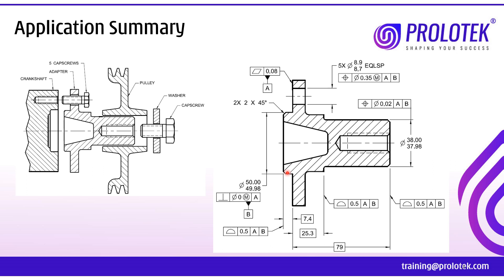If we take this diameter as an individual feature, it is an axis symmetric feature. From the TTFT approach: first T — axis symmetric feature; second T — individual feature application, so we have form control. Flatness is ruled out. What remains is straightness, circularity, and cylindricity. Cylindricity is the most appropriate geometrical tolerance for an individual axis symmetric feature in this case.